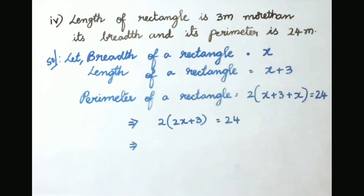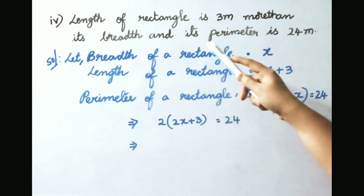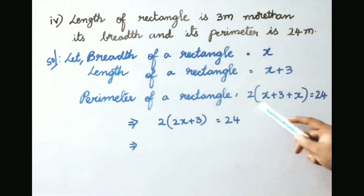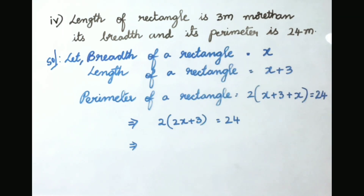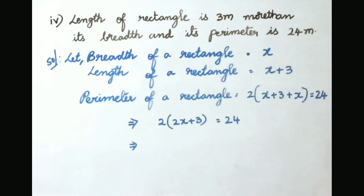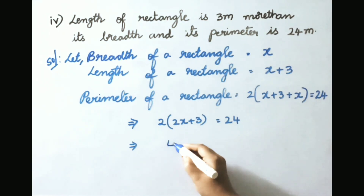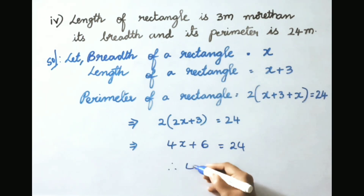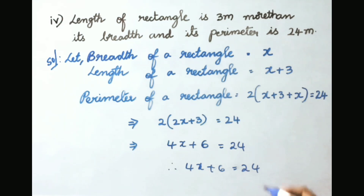Fourth: the length of a rectangle is 3 meters more than its breadth and its perimeter is 24 meters. Let the breadth be x, so length is x plus 3. Perimeter formula is 2 into length plus breadth, which equals 2 into (x plus 3 plus x) equals 24. That gives 2 into (2x plus 3) equals 24, so 4x plus 6 equals to 24 is the simple equation.